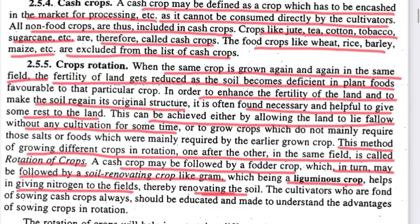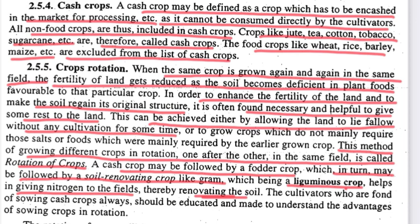The kor period also depends on cash crops versus food crops. Cash crops are crops grown for sale and processing, such as juice, tea, cotton, tobacco, and sugarcane. Food crops are those we can directly consume, such as wheat, rice, barley, and maize.